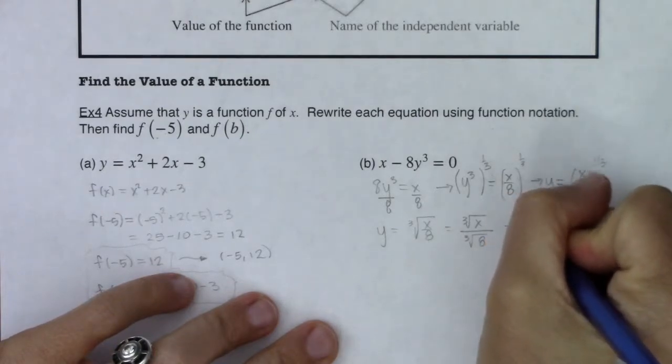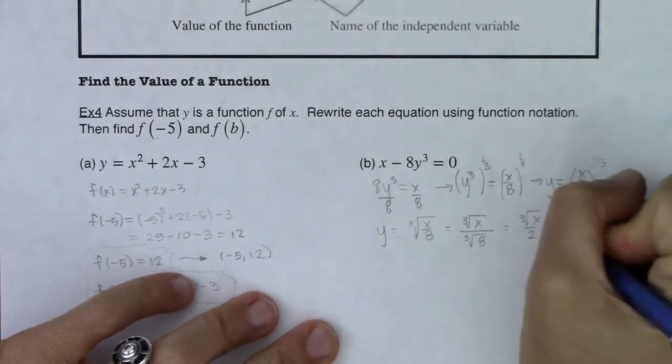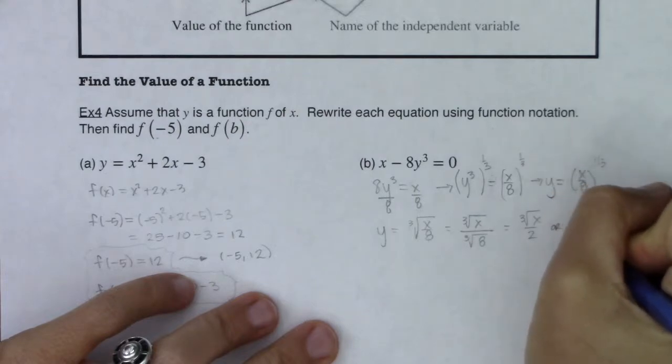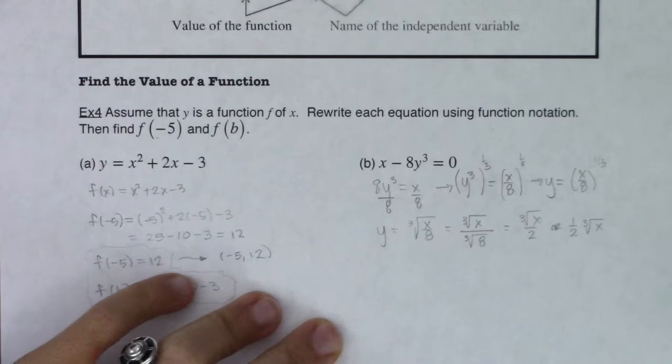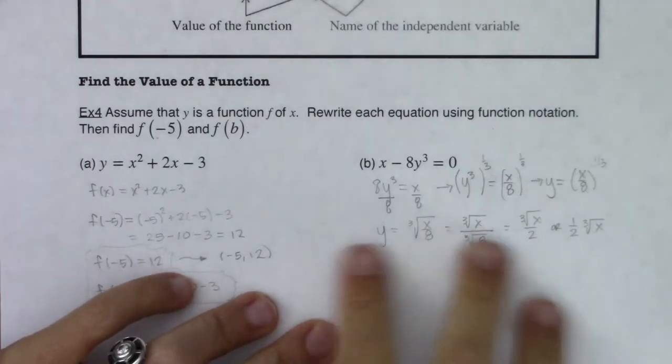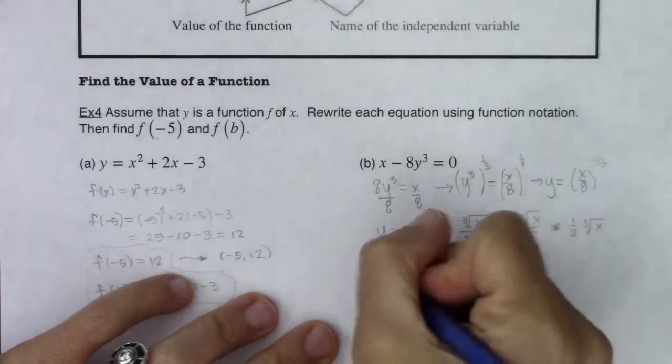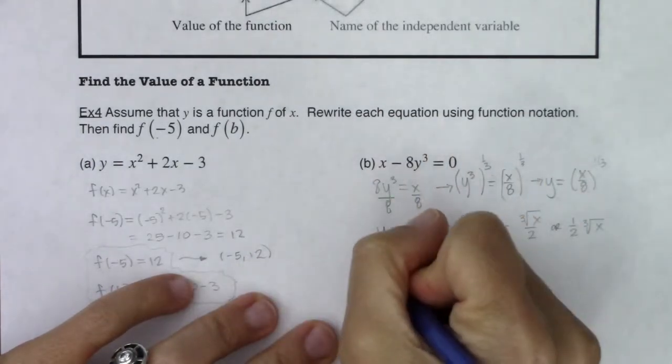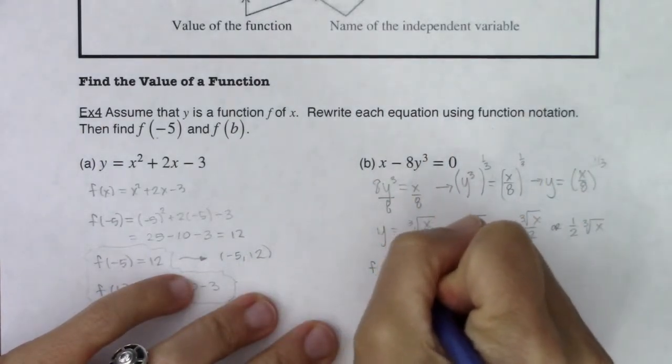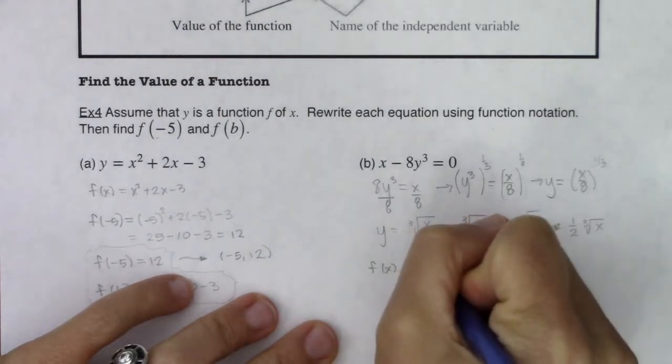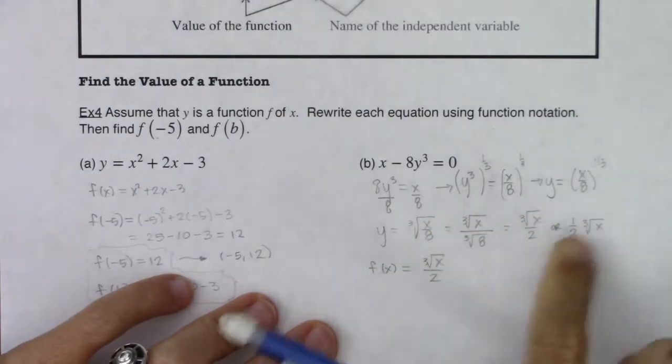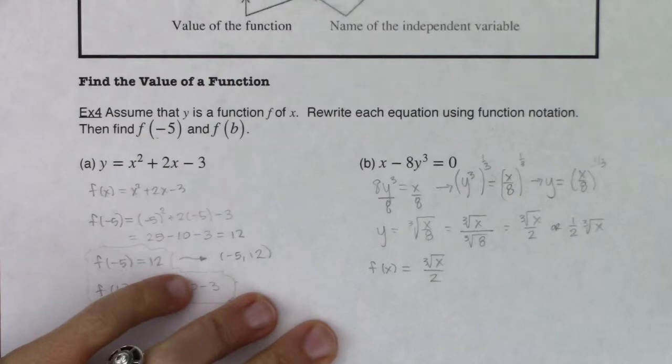I'm going to distribute this radical or this rational exponent to the numerator and denominator and I can distribute that exponent because this is division. When there's multiplication or division in the parentheses you can distribute an exponent or a root. When there's addition or subtraction you can't. The reason I want to do that is because the cube root of 8 is 2. So ultimately I'm looking at the cube root of x over 2 or if you prefer you could write that as 1 half times the cube root of x. It doesn't matter which way you write it. But now that I've solved for y, ultimately to rewrite this function using function notation I know f of x is equal to the cube root of x over 2 or again I could have written 1 half cube root of x.